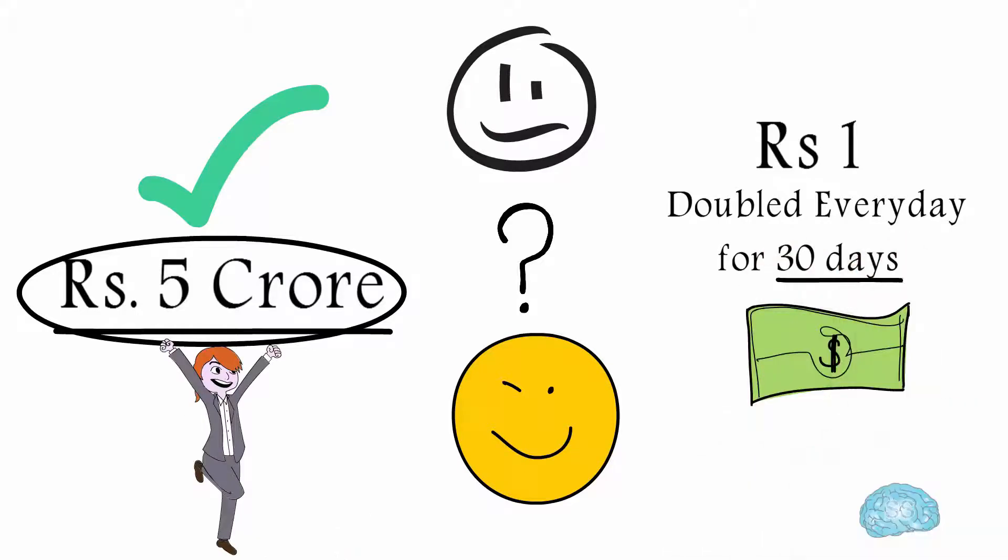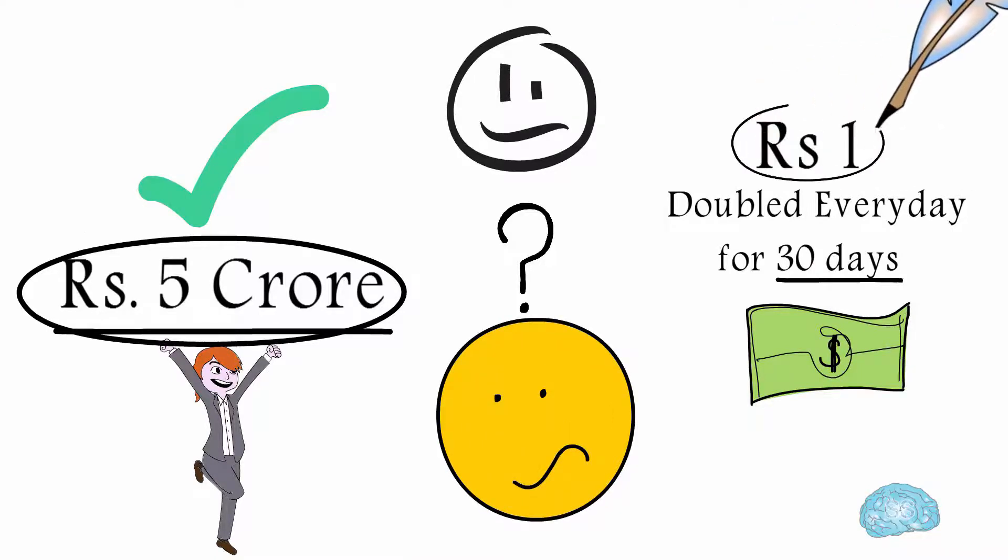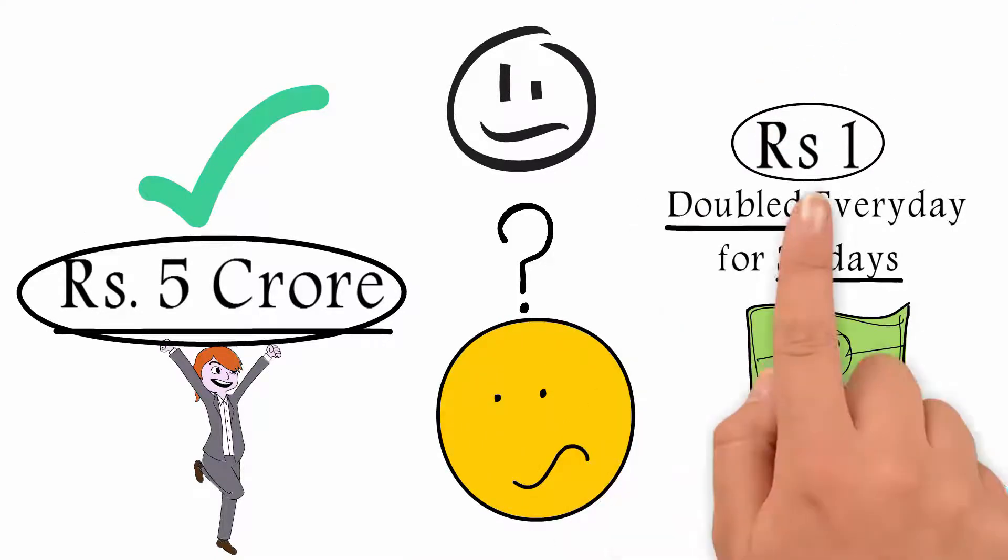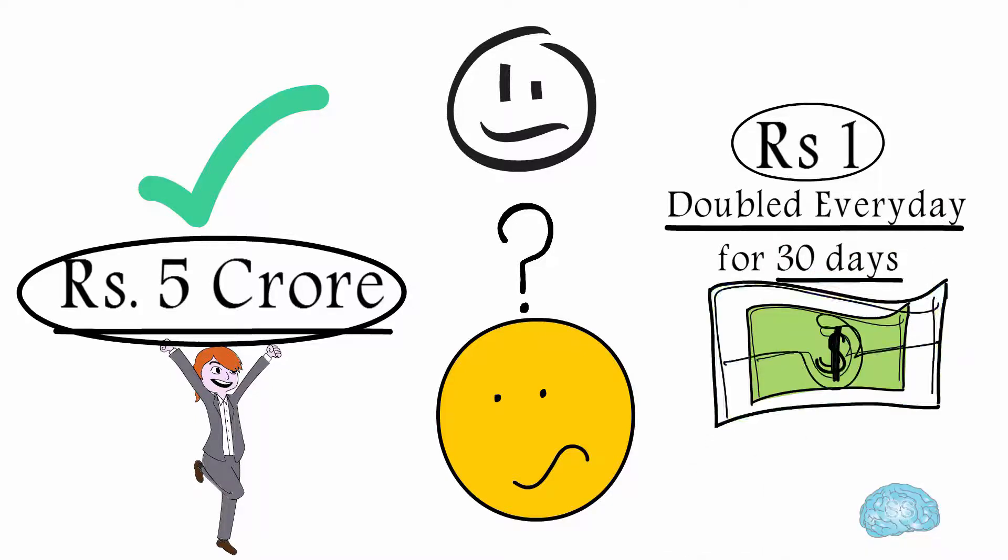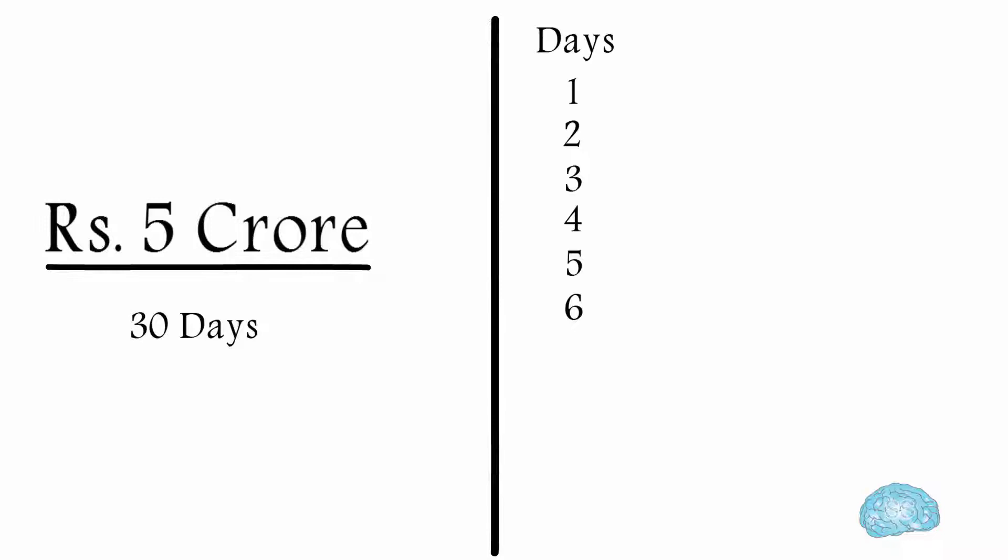So we choose 5 crore rupees. But do you know how much this 1 rupee will become if doubled every day for 30 days? Let's see. Here you have 5 crore rupees. This 5 crore will remain as it is for the next 30 days, and here you have 1 rupee today. Tomorrow it becomes 2 rupees.